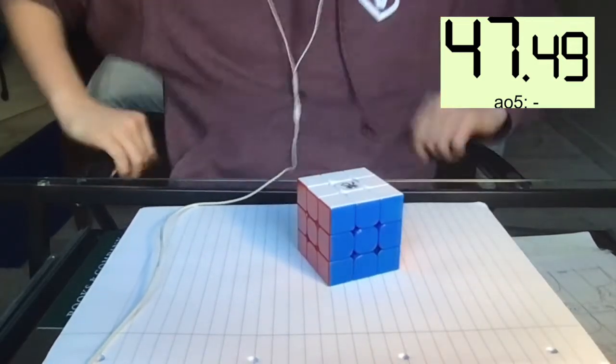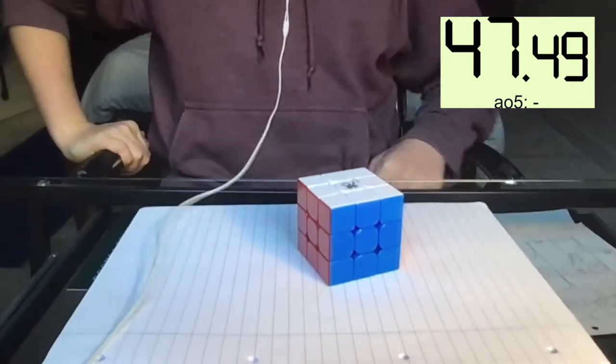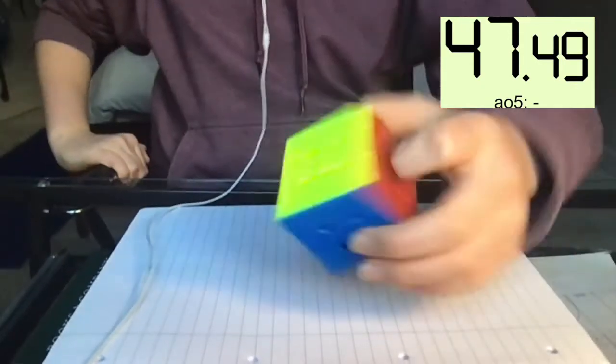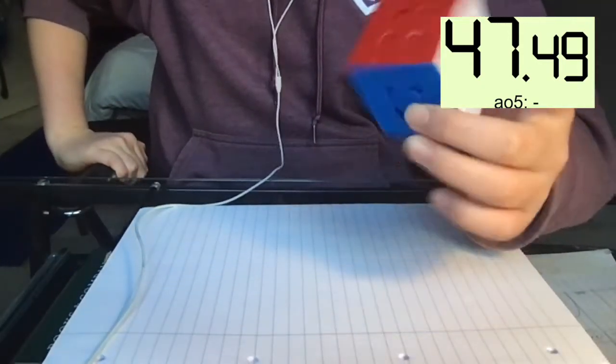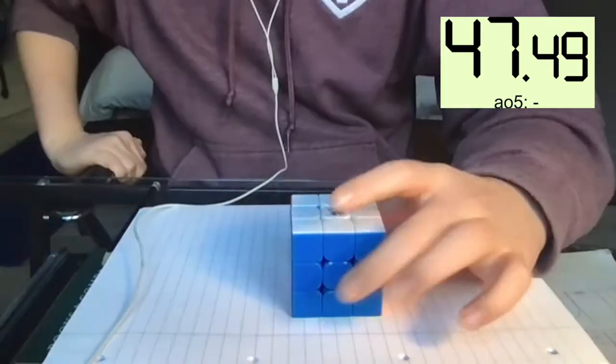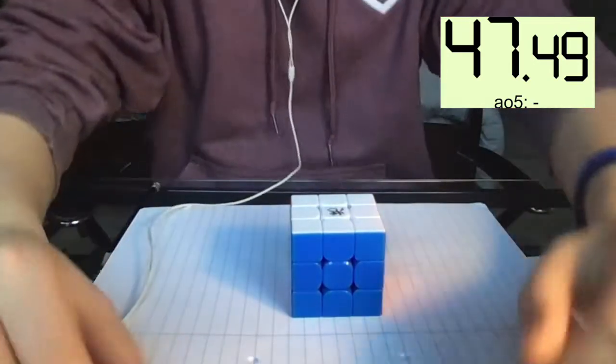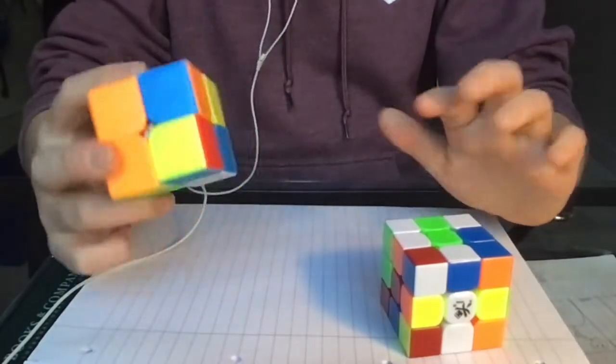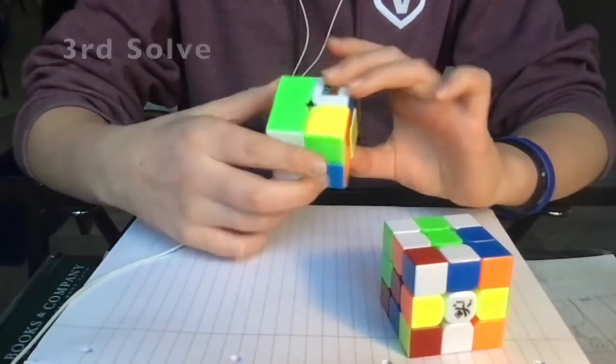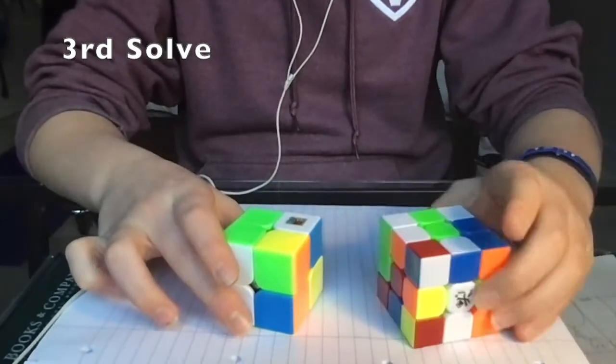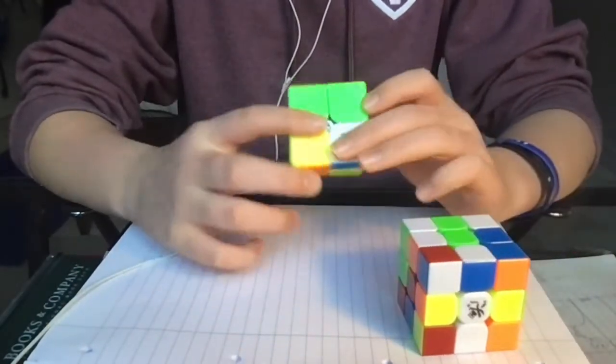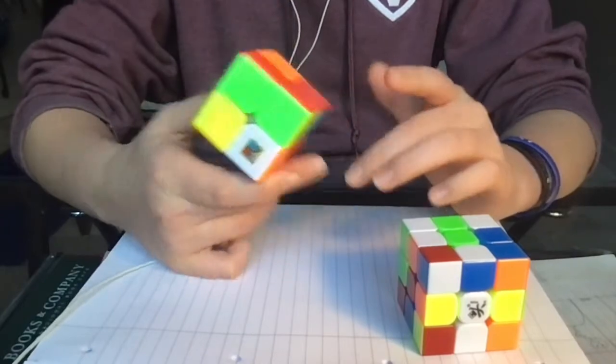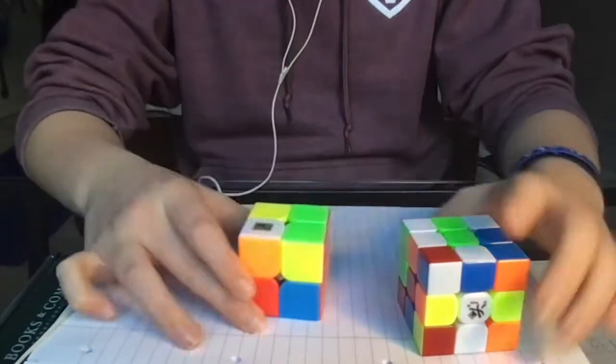That was a good, good solve. I'm pretty sure I beat, this was Henry's solve again. I'm pretty sure I beat that one this time. As it said in the video, I think we started with 2x2 and then to 3x3. So yeah, that's basically what we're going to do here.